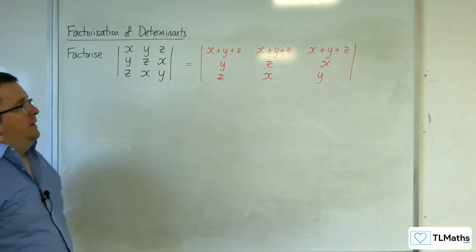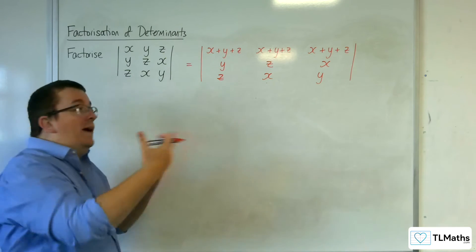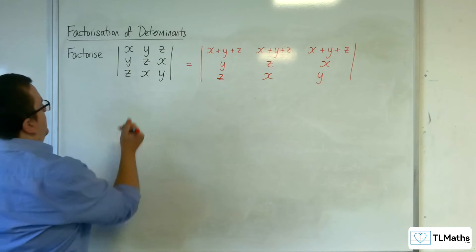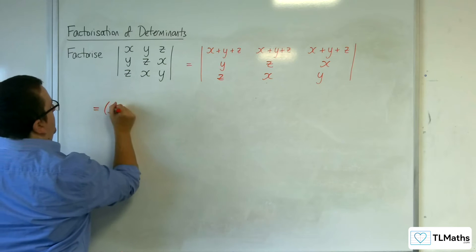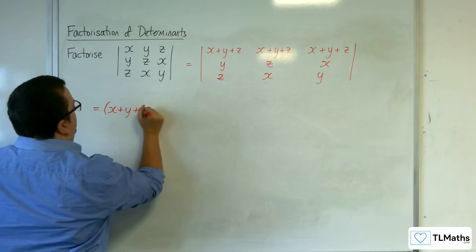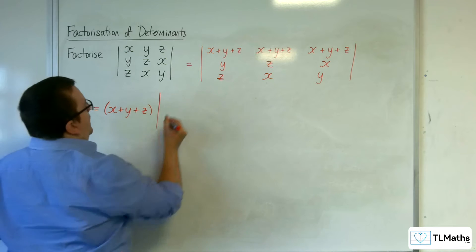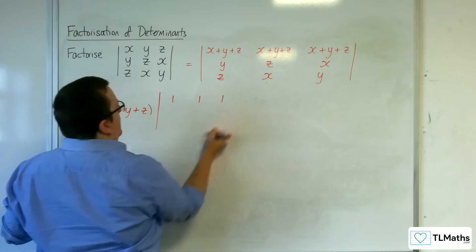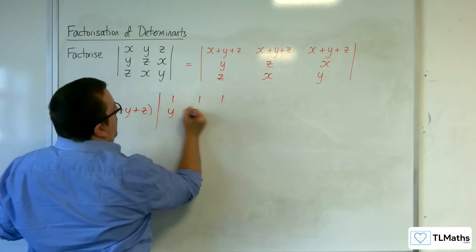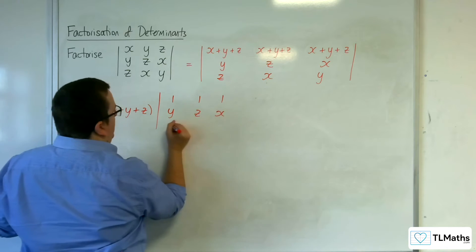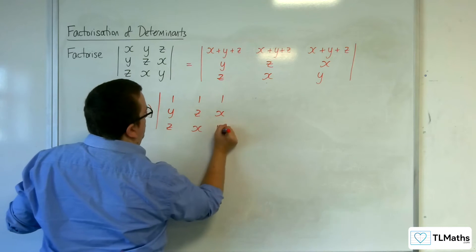Now, as I said, I can factor out the x plus y plus z. So x plus y plus z comes outside and I'll have 1, 1, 1 in the top row now. Y, z, x, z, x, y.